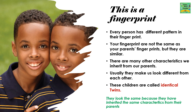There are many other characteristics we inherit from our parents. Usually they make us look different from each other. These children are called identical twins. They look the same because they have inherited the same characteristics from their parents.